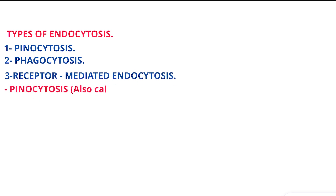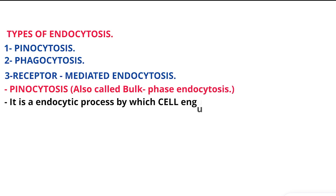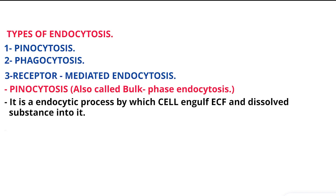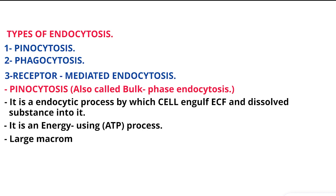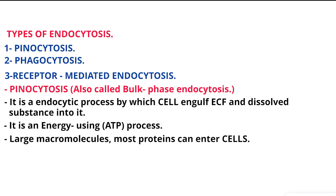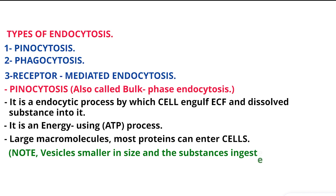Pinocytosis, also called bulk phase endocytosis. It is an endocytic process by which a cell engulfs ECF and dissolved substances into it. It is an energy-using ATP process. Large macromolecules, most proteins, can enter cells. Note: vesicles are smaller in size and the substances ingested are in solution. Also called cell drinking.